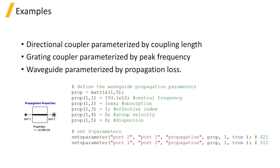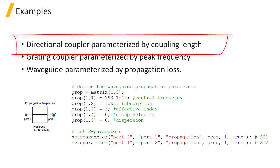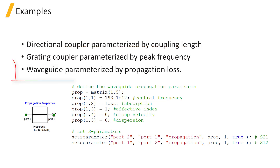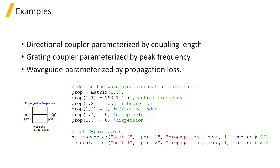Example components you could represent by using a scripted element include a directional coupler parameterized by coupling length, a grading coupler parameterized by peak frequency and bandwidth, or a waveguide parameterized by propagation loss.